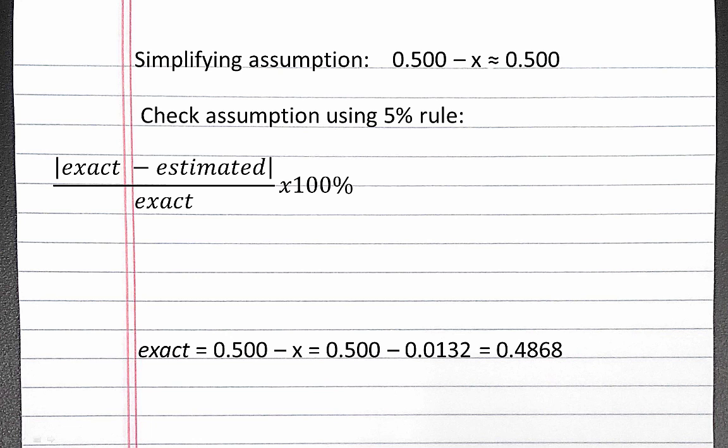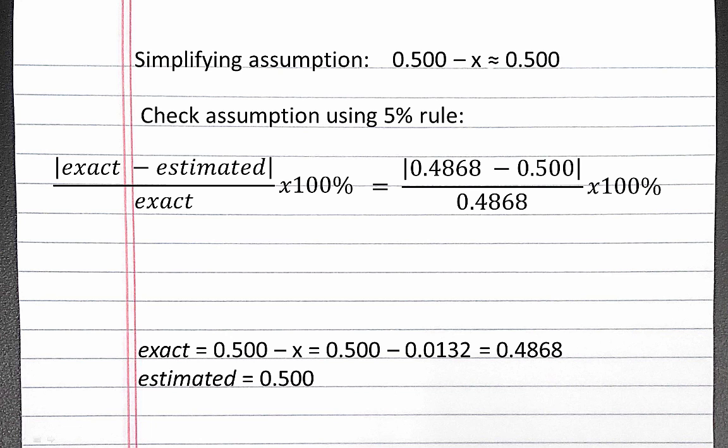Our exact value was 0.5 minus x. When we solve for x, we got 0.0132. We replace this exact value with our estimated value, which was just 0.5 when we were solving for x. So plugging these values into our equation and solving, we find our value is 2.71%.